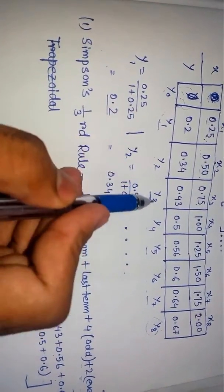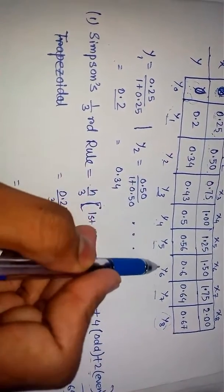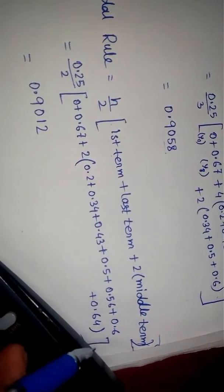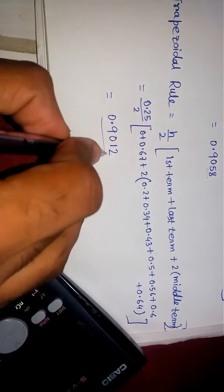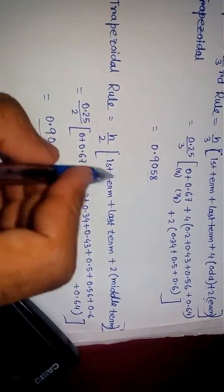Now come to this point: 2 into the rest of the part - that is y₁ plus y₂ plus y₃ plus y₄ plus y₅ plus y₆ plus y₇. The whole thing is written here. If you calculate it, you will get this type of answer.